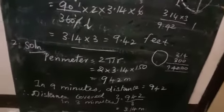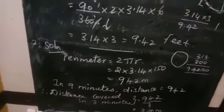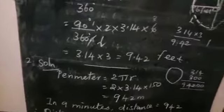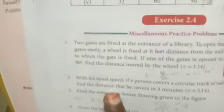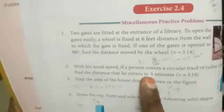The distance moved by the wheel is 9.42 feet. Then the second problem: With his usual speed, if a person covers a circular track of radius 150 meters in 9 minutes, find the distance that he covers in 3 minutes.